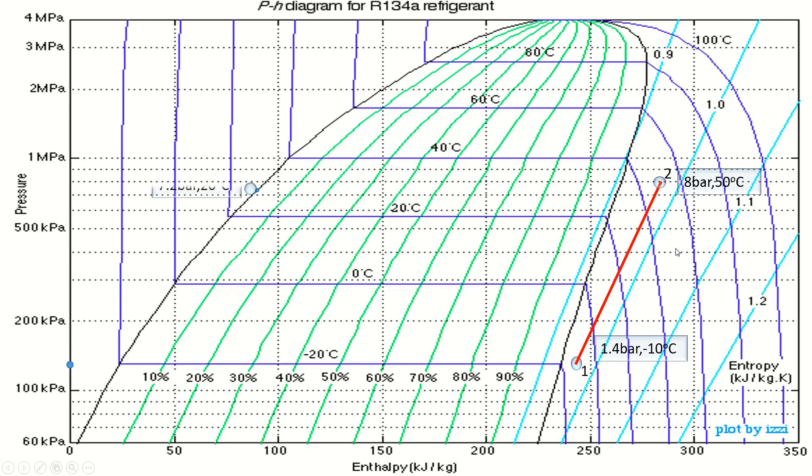Now Point 3, pressure drops to 7.2 bar and temperature is 26°C. 0.72 megapascal will be here and temperature is 26°, between 20 and 25. Point 3 is plotted.